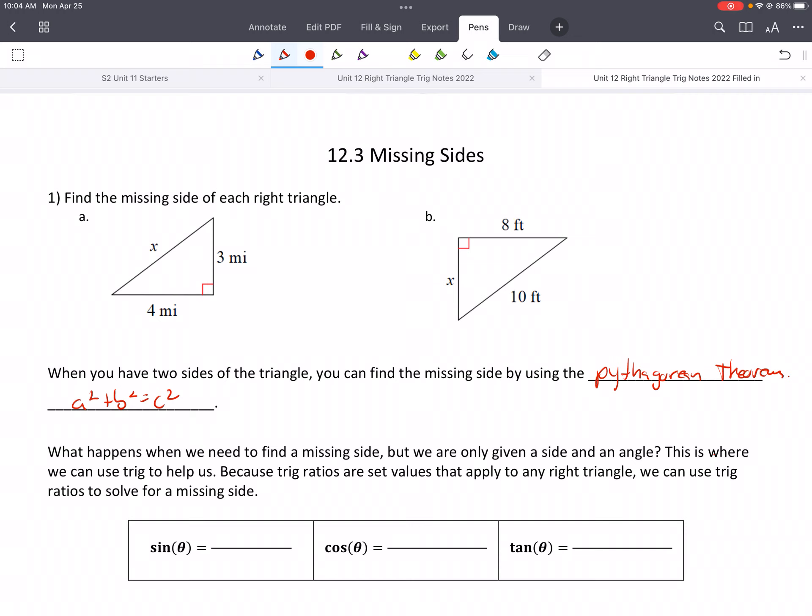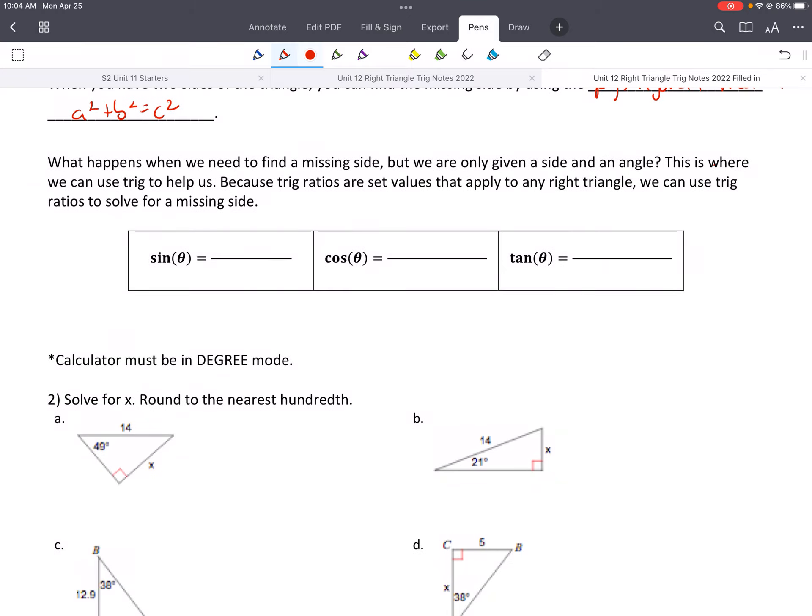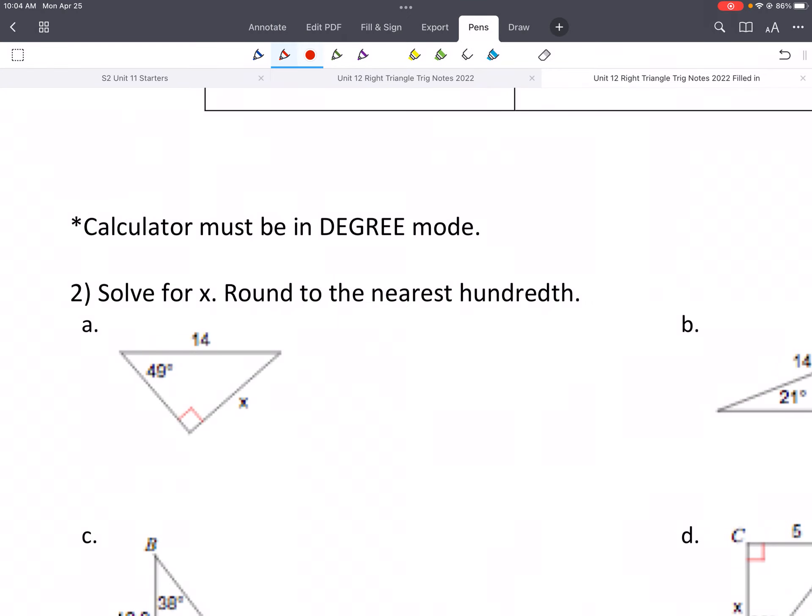We'll skip this because what you're going to find is our problems, we're only going to be given one of the sides. So we can't use the Pythagorean Theorem, but we can use trigonometry.